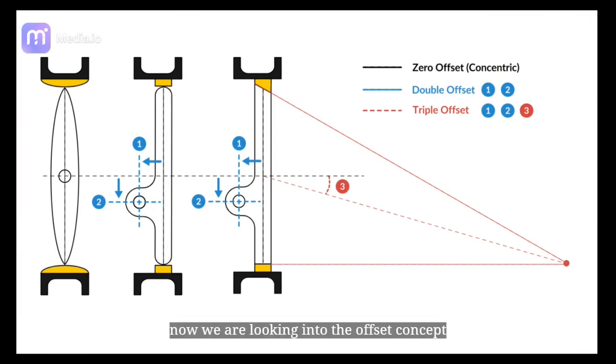Now we are looking into the offset concept for double and triple offset butterfly valves. The first one is concentric without any offset. Second one double offset, and the third one with additional offset in seat angle. Let's check it out in more detail.